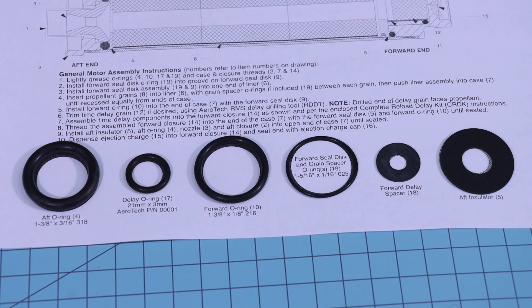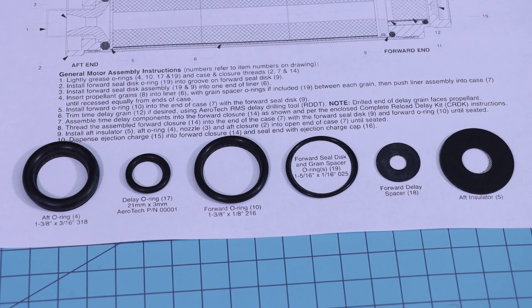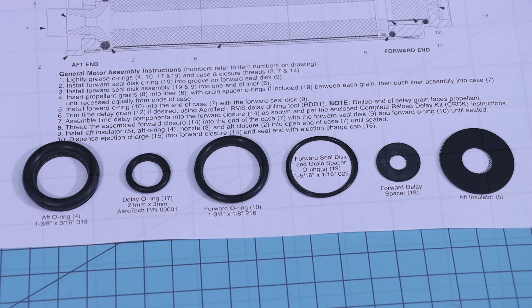We have the aft o-ring, the delay o-ring, the forward o-ring, the forward seal disc o-ring, the forward delay spacer, and the aft insulator.